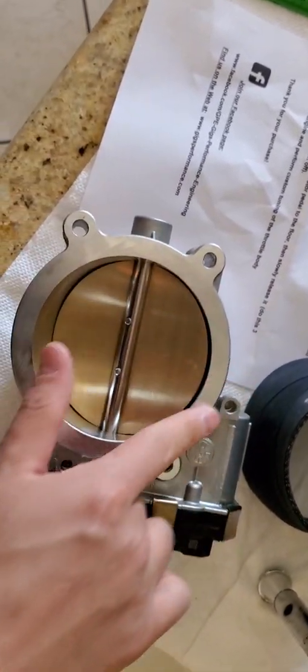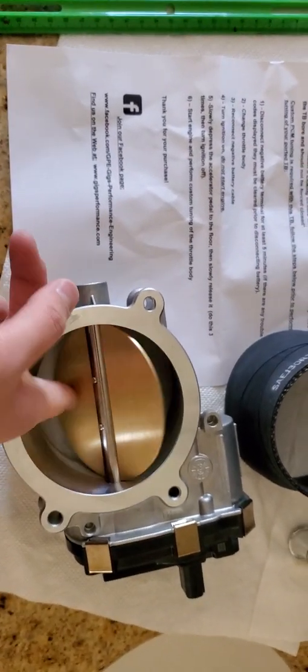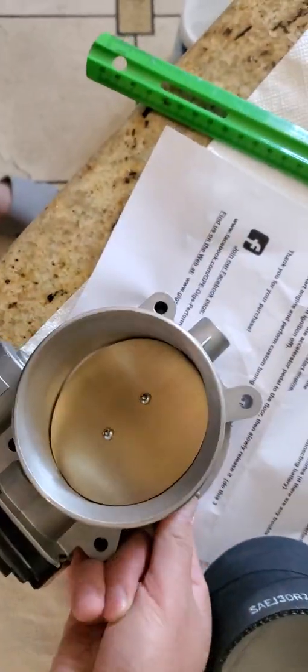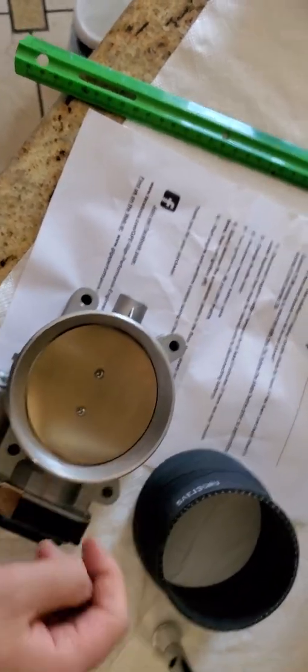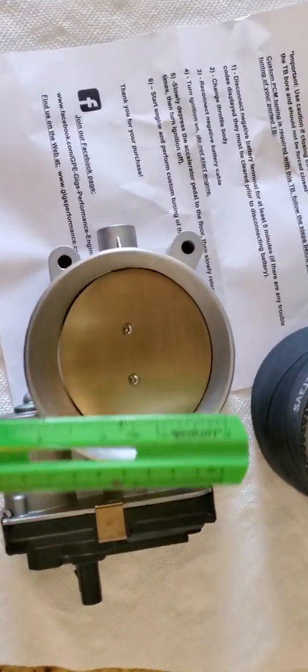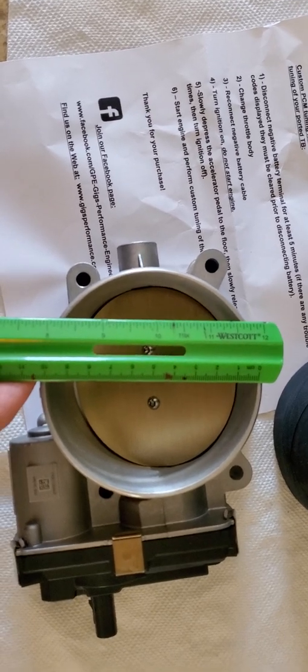It's polished and very smooth, and it turns very easily. So this is a 95 millimeter ZL1 Camaro LT1 throttle body. Let's take a look and measure from the top to bottom.